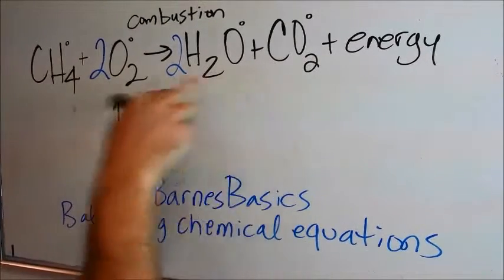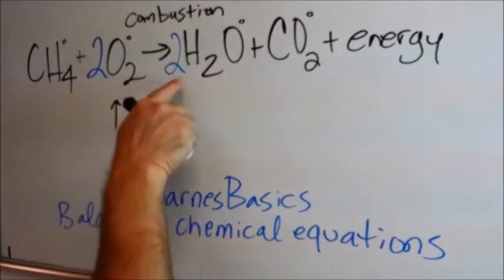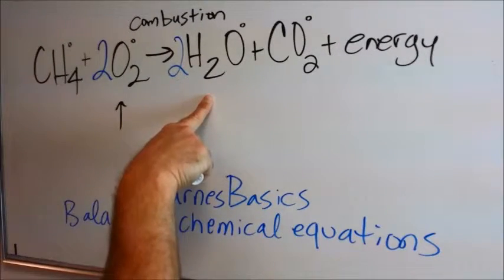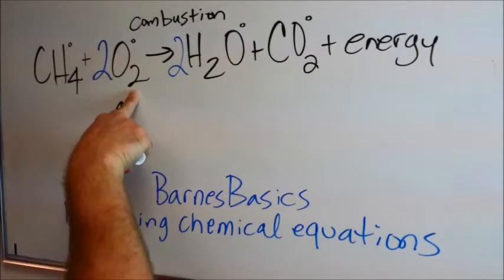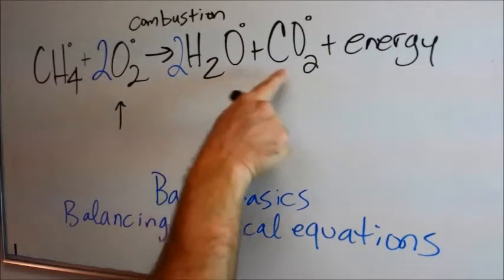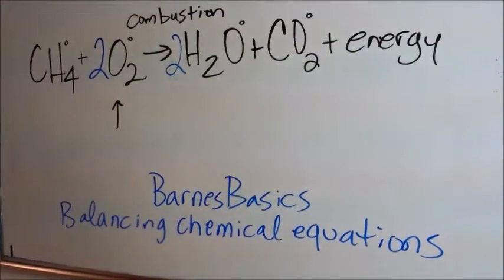One carbon, one carbon, four hydrogens, two times two is four hydrogens, two times two is four oxygens. There are two oxygens and two oxygens. I think we're fine here.